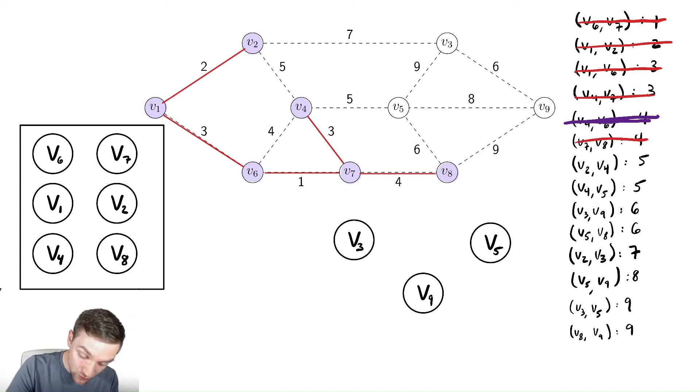We then check v2, v4. We notice v2 and v4 are both in the same set. So that would create a cycle. So we aren't going to add v2, v4 for that reason.